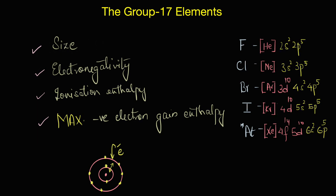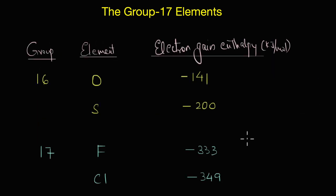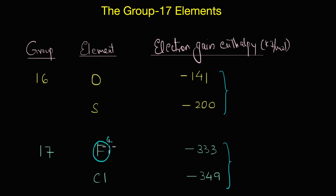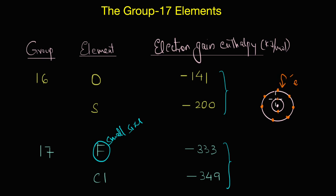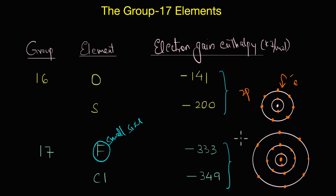Although we just have to deal with one exception: just as we observed in the case of oxygen versus sulfur, the negative electron gain enthalpy of fluorine is lesser than that of chlorine. This is again because of the super small size of fluorine - the incoming electron experiences stronger electron-electron repulsion in the small 2p orbitals. On the other hand, chlorine has relatively larger 3p orbitals, and as a result the incoming electron experiences much less electron-electron repulsion. This is why less energy is released when you add an electron to fluorine as compared to chlorine.